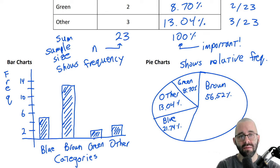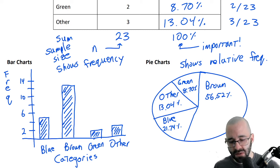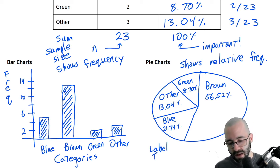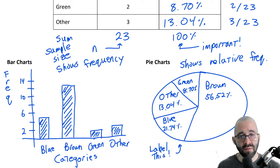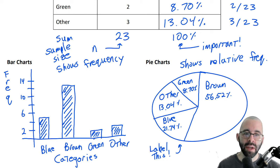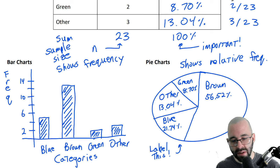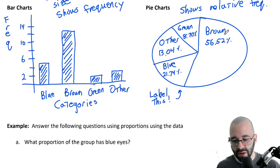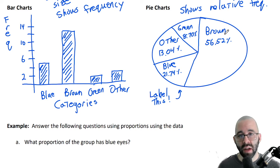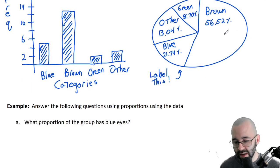The important thing is that you do have your labels. Pie chart sections need to be labeled with the category and the percent. If I ever make you create one of these, I'll have you do it with the computer. The important thing is that you know how to read one and know basically what they are.